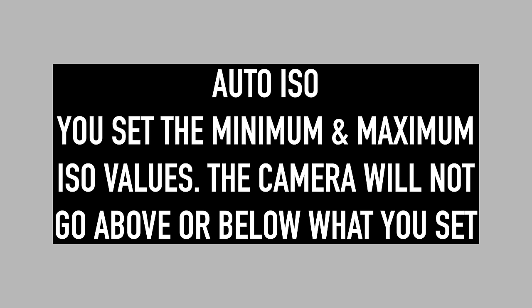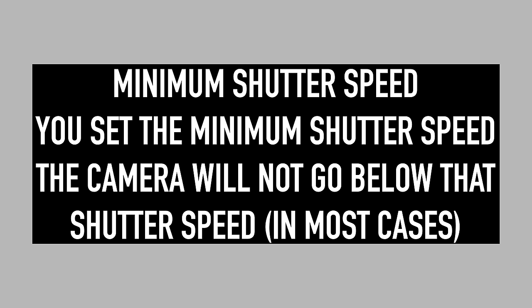The first thing we need to do is set up auto ISO. Auto ISO is effectively where you say to the camera: this is the lowest ISO I want to use, and this is the highest ISO value I want the camera to use, and then you can select anything between that range. Secondly, you want to make sure that your minimum shutter speed is set up correctly, because if it's set to auto or something extremely low, the camera will select an inappropriate shutter speed and you'll end up with a blurry photo.